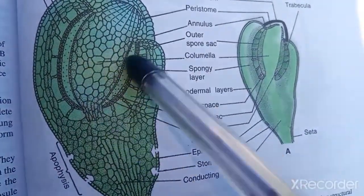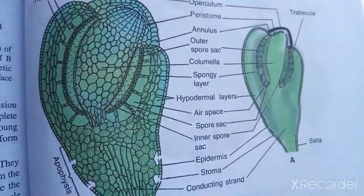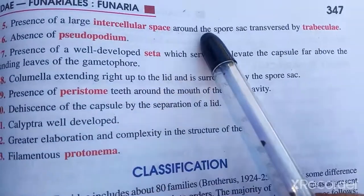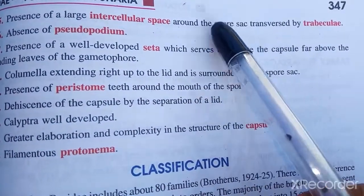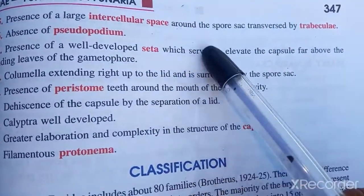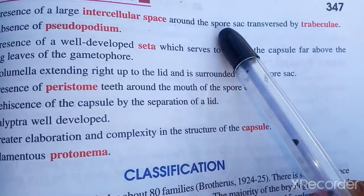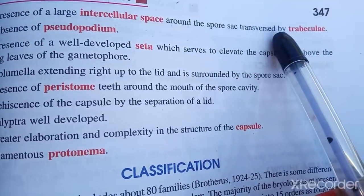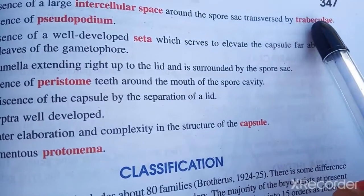Around the spore there is presence of intracellular space. This intracellular space around the spore is transverse and formed by the tubercules.